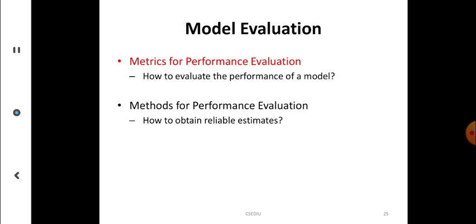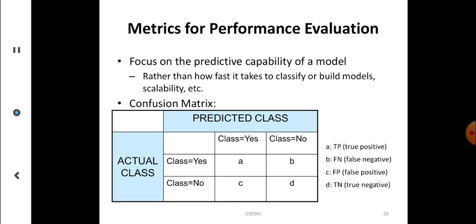Model evaluation is very important. There are two things: metrics for performance evaluation, where we evaluate the performance of a model, and methods for performance estimation, how to obtain reliable estimates. One key aspect is the confusion matrix for performance evaluation, which focuses on the predictive capability of a model. The confusion matrix is a two-by-two table with predicted class on one axis and actual class on the other.